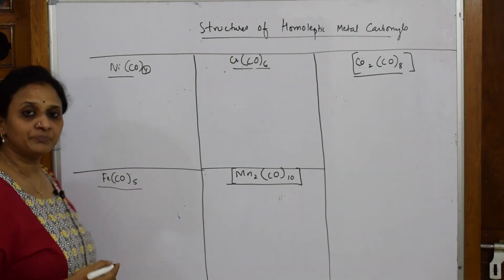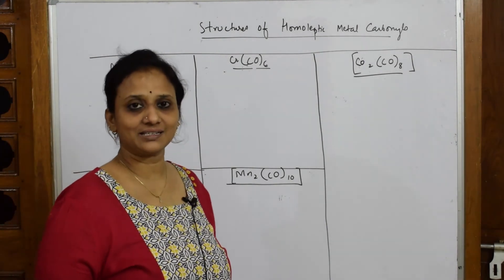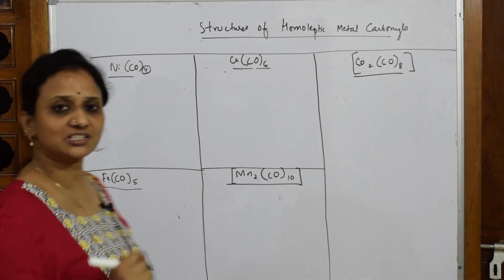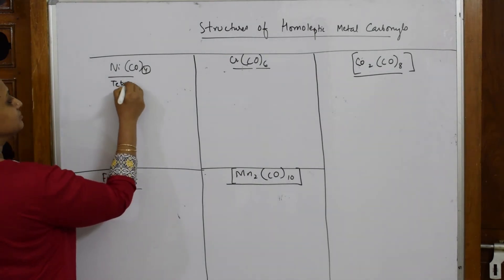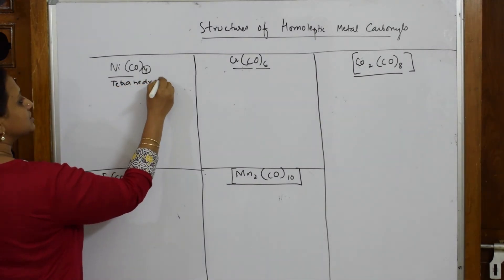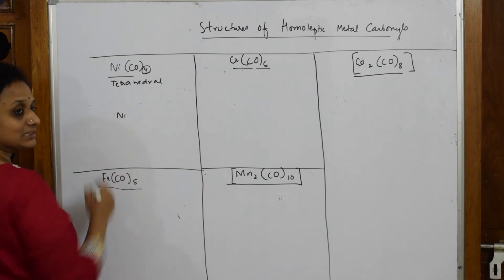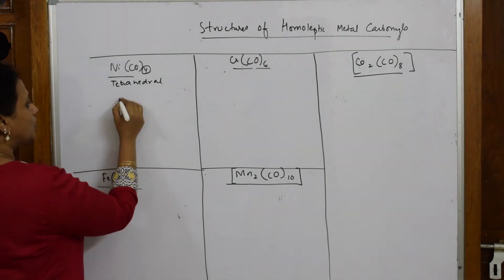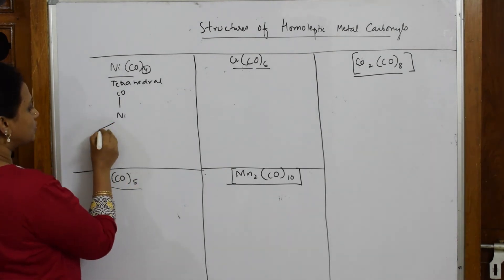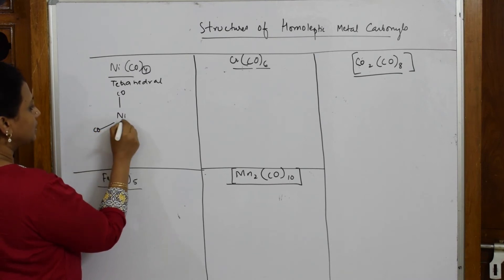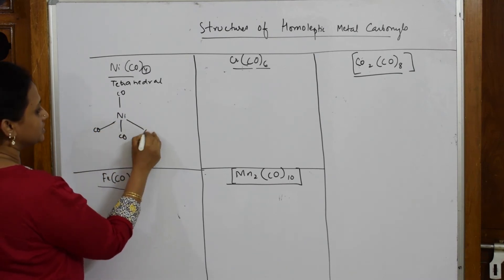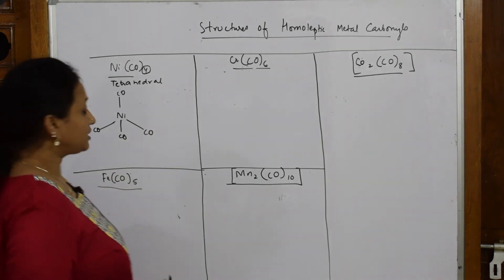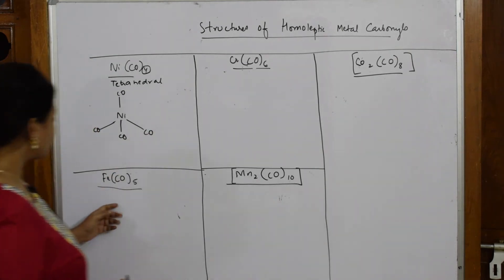Whenever such a compound is given, see the coordination number. For Ni(CO)₄, the coordination number is four — tetra — so the structure is tetrahedral. Draw nickel in the center, one carbonyl above, one below, and two more in a tetrahedral arrangement. This is your tetrahedral structure.